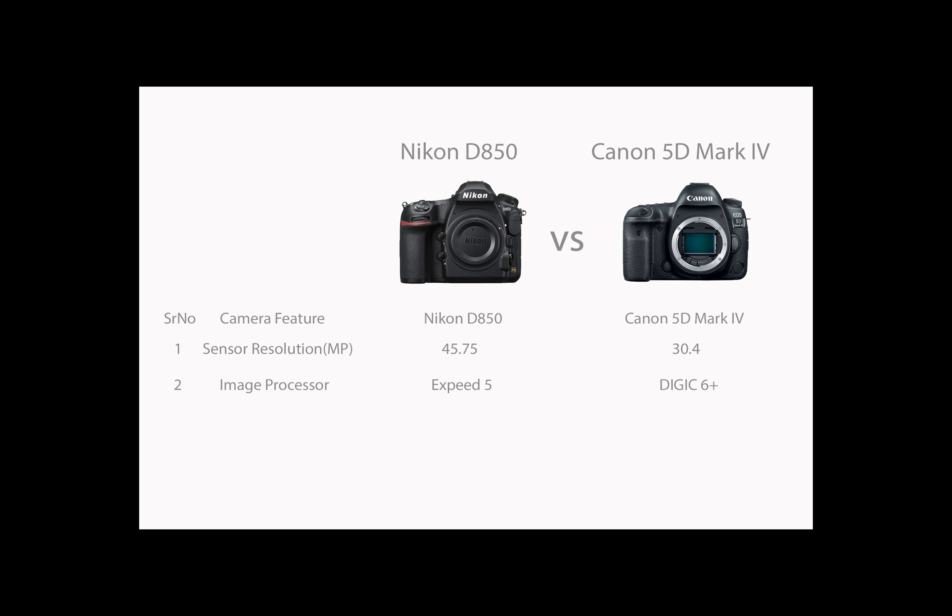The image processor of Nikon D850 is EXPEED 5, whereas that of Canon 5D Mark IV is DIGIC 6+. Base ISO of Nikon D850 is 64, whereas that of Canon 5D Mark IV is 100. Capturing images at a lower ISO of 64 with the Nikon D850 yields exceptional dynamic range, whereas Canon typically struggles with good dynamic range.